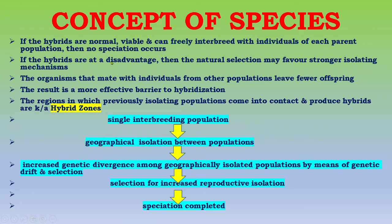If the hybrids are at a disadvantage, then natural selection may favor stronger isolating mechanisms. The organisms that mate with individuals from other populations leave fewer offspring, resulting in a more effective barrier to hybridization. The regions in which previously isolated populations come into contact and produce hybrids are known as hybrid zones.